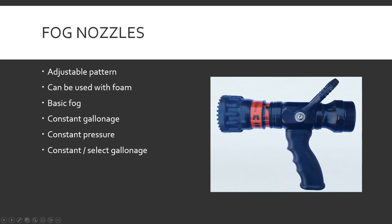Constant gallonage nozzles discharge a constant rate throughout their range of patterns at a designated pressure. So if it's stamped 95 PSI at 100 gallons per minute, 95 PSI comes in and no matter where you set it — straight stream or fog stream — on a constant gallonage nozzle, it's going to be 100 gallons per minute coming out because it's at its 95 PSI.